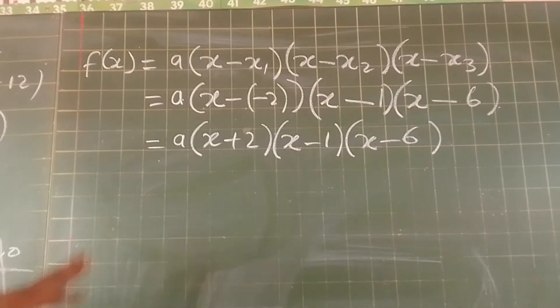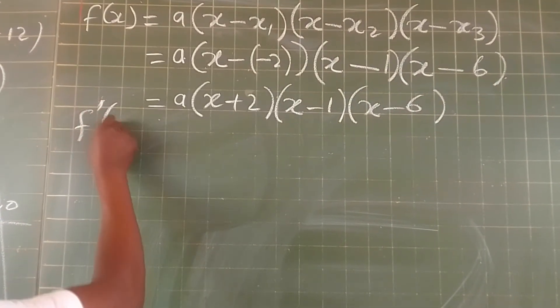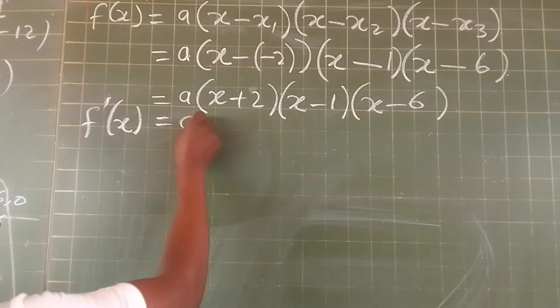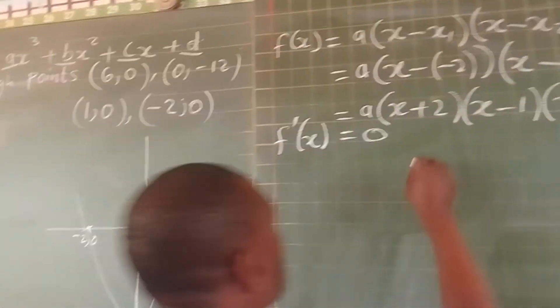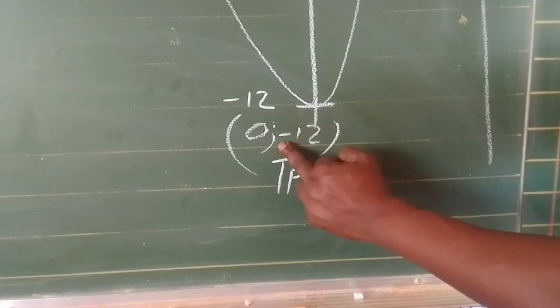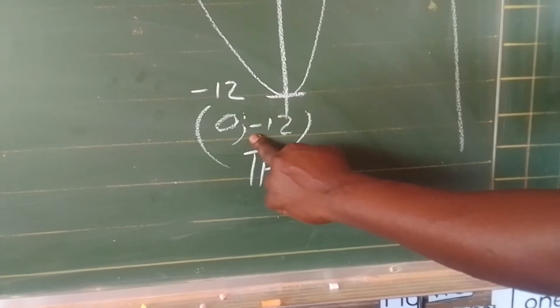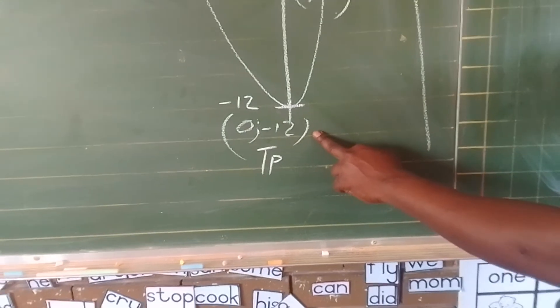But at a point, we have the derivative of x, which is equal to zero, at which we give them the points of the turning point, where our x is zero and our y is negative 12.